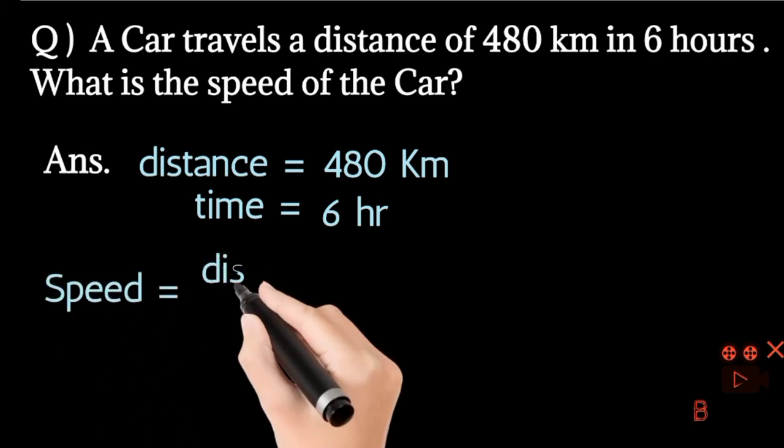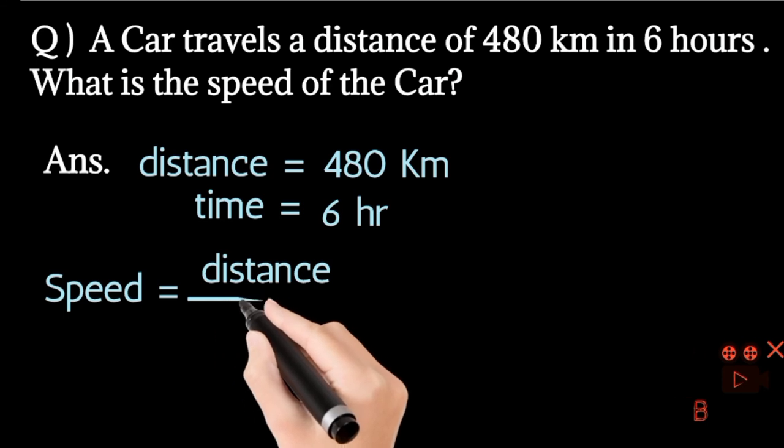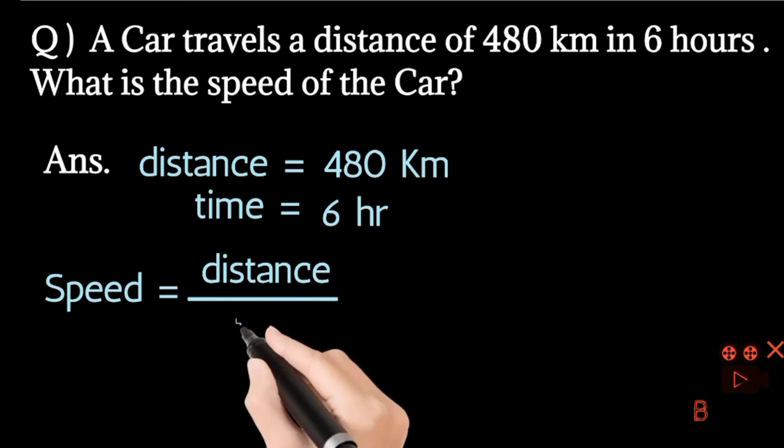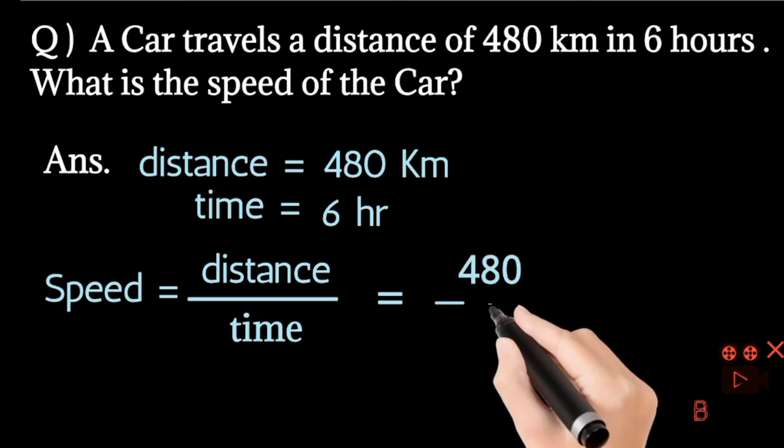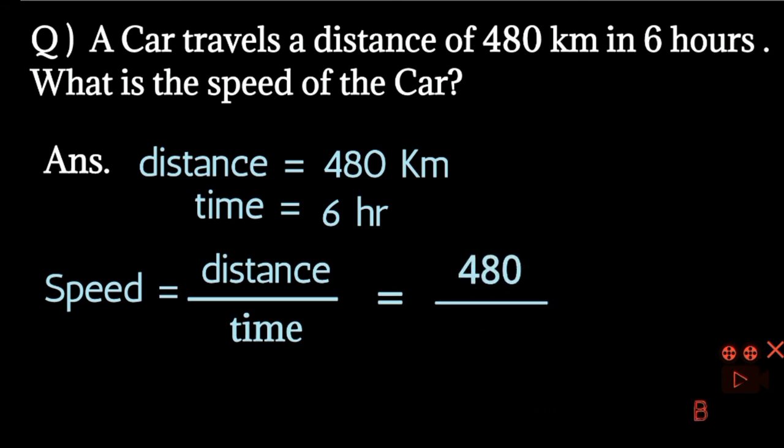We know that speed equals to distance by time. What is the speed of the car? Distance is 480 km, time is 6 hours.